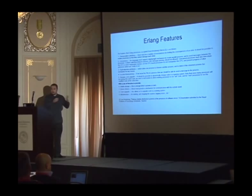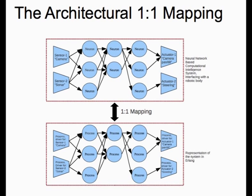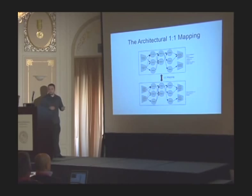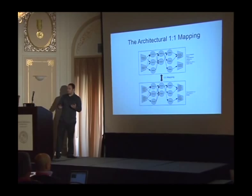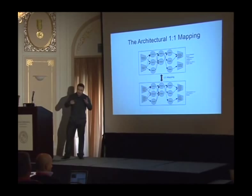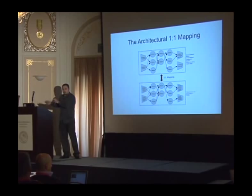Erlang seems to be the perfect language — it's exactly what we've been looking for. It has a conceptual one-to-one mapping: we have a neural network sensor, a bunch of neurons interconnected, and actuators. Represented in Erlang, it's direct — it's a process sending messages to each other, interacting, and controlling hardware through actuators. Having this kind of perfect conceptual mapping is very important because it allows you to think about the problem directly instead of switching contexts, which lets you tackle much larger problems.